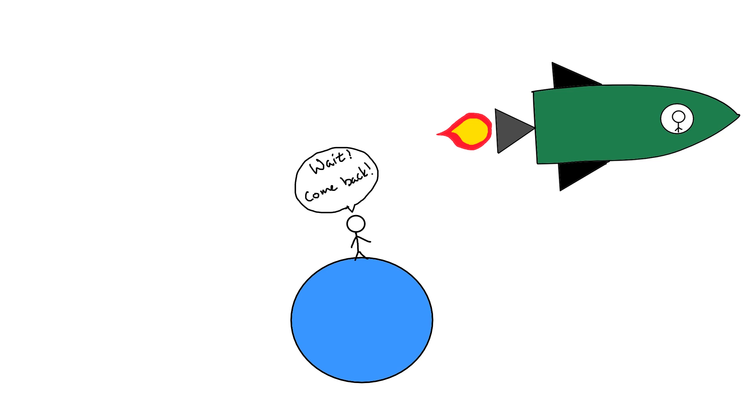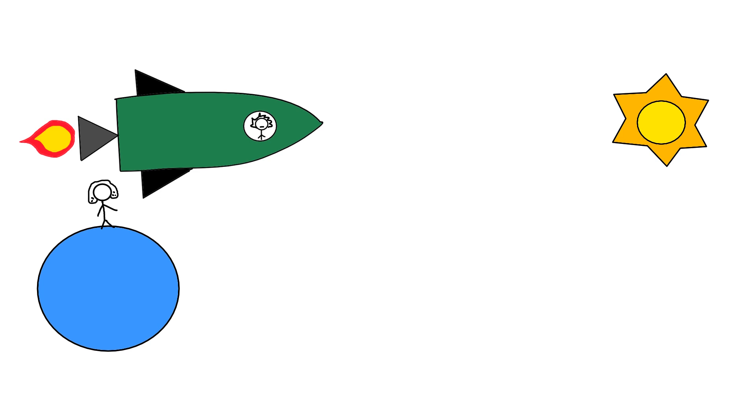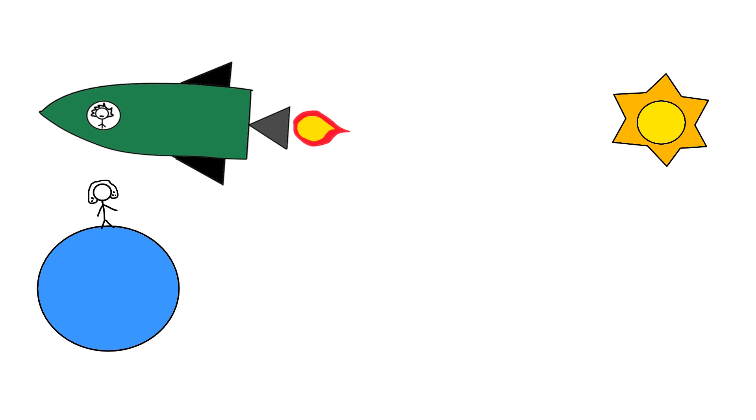So let's say Isaac stays on Earth while Albert jumps on a spaceship and flies out to a nearby star and then turns around and comes back. On Albert's spaceship, he sees Isaac and Earth fly away from him and then turn around and come back as well.